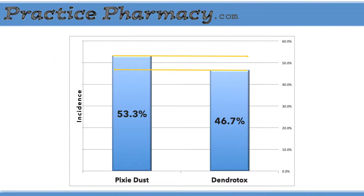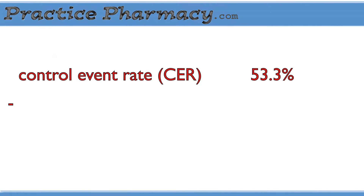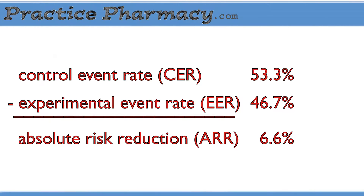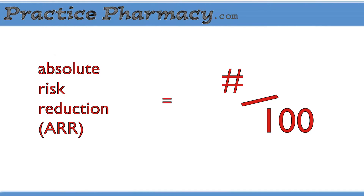The efficacy of the product lies in the difference between the event rates in the two groups. That difference is 6.6%, and that's called the absolute risk reduction. In official language: the control event rate minus the experimental event rate equals the absolute risk reduction. The absolute risk reduction gives us the number of people out of a hypothetical group of 100 experiencing benefit from the treatment.